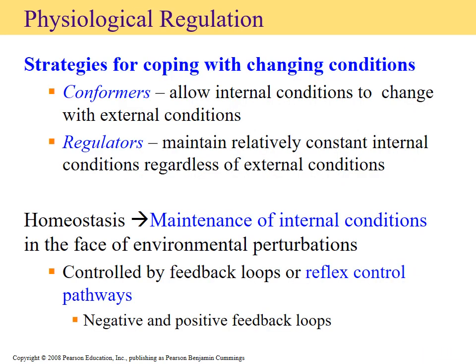To maintain homeostasis, organisms are often labeled either as conformers or regulators. A conformer, as the name implies, conforms or matches its external conditions. A regulator has mechanisms or systems set up that allow the internal temperature or pH to remain consistent regardless of the environment. Regulators usually require more energy to maintain their consistency, whereas conformers simply adjust — each cell basically has to survive on whatever environment it's exposed to.